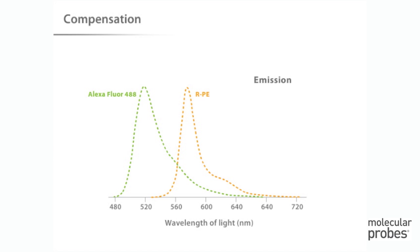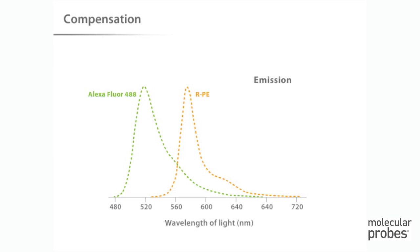For proper interpretation of the data collected, we need to be sure that the fluorescent light we are recording for Alexa Fluor 488 dye is coming from the Alexa Fluor dye and not from RPE, which happens to emit some light in the same wavelength range. To accurately record the fluorescence signal for a given fluorophore, we need to correct the emission signal, and this correction is often called compensation. The flow cytometer records fluorescence using an emission filter chosen to collect the maximum amount of light coming from the fluorophore of interest, and to exclude as much light as possible from other nearby fluorophores.